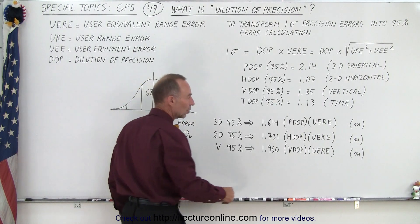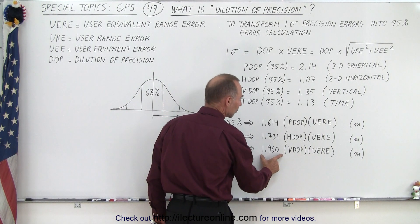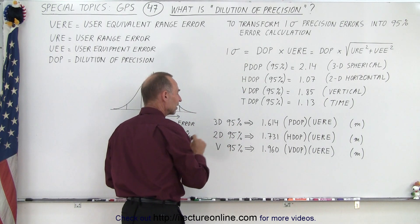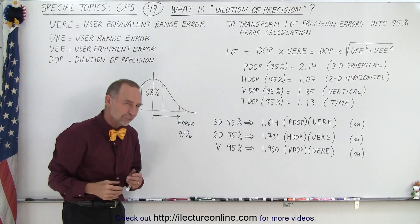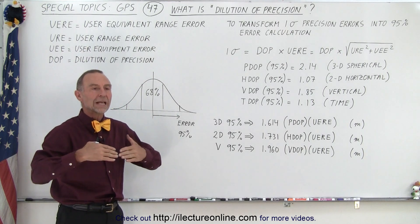And if we work in the vertical alone, we take the UERE, multiply times the VDOP, multiply times 1.96, and then we turn a one sigma range into a two sigma range, 95% of all values in the vertical direction.